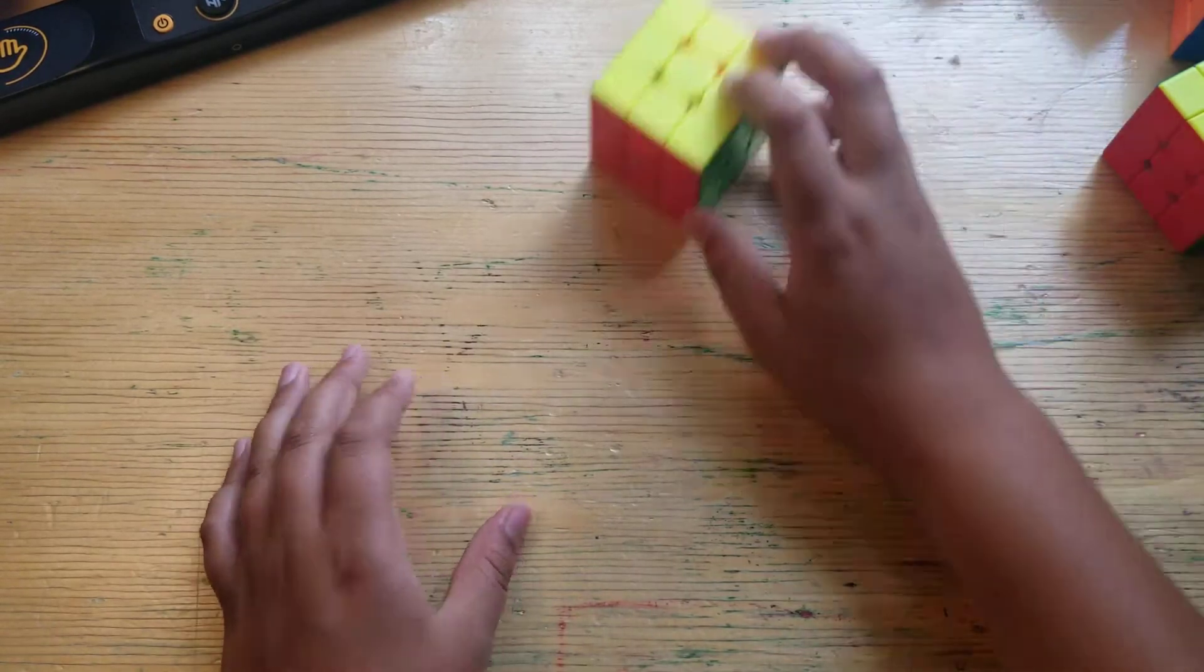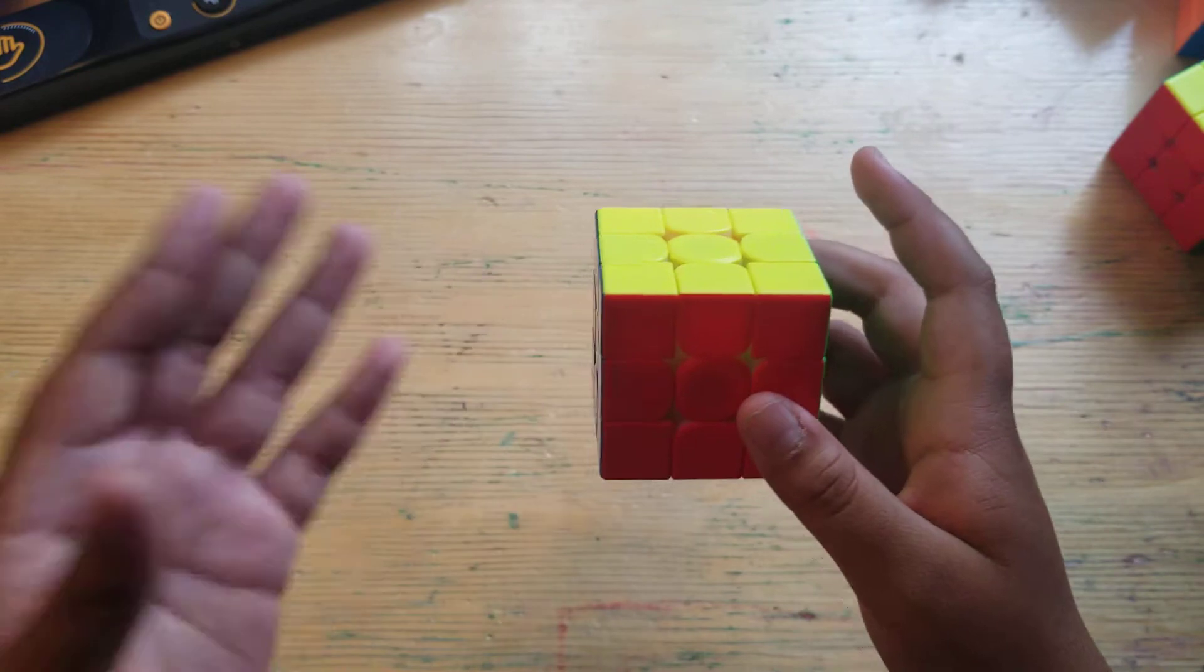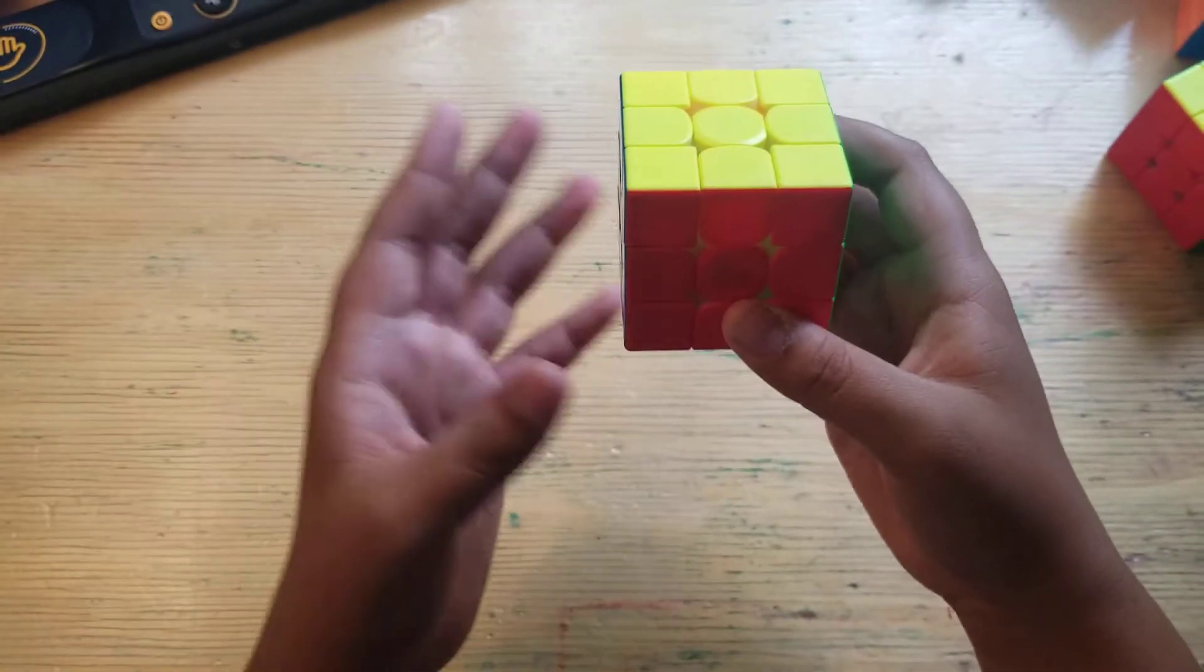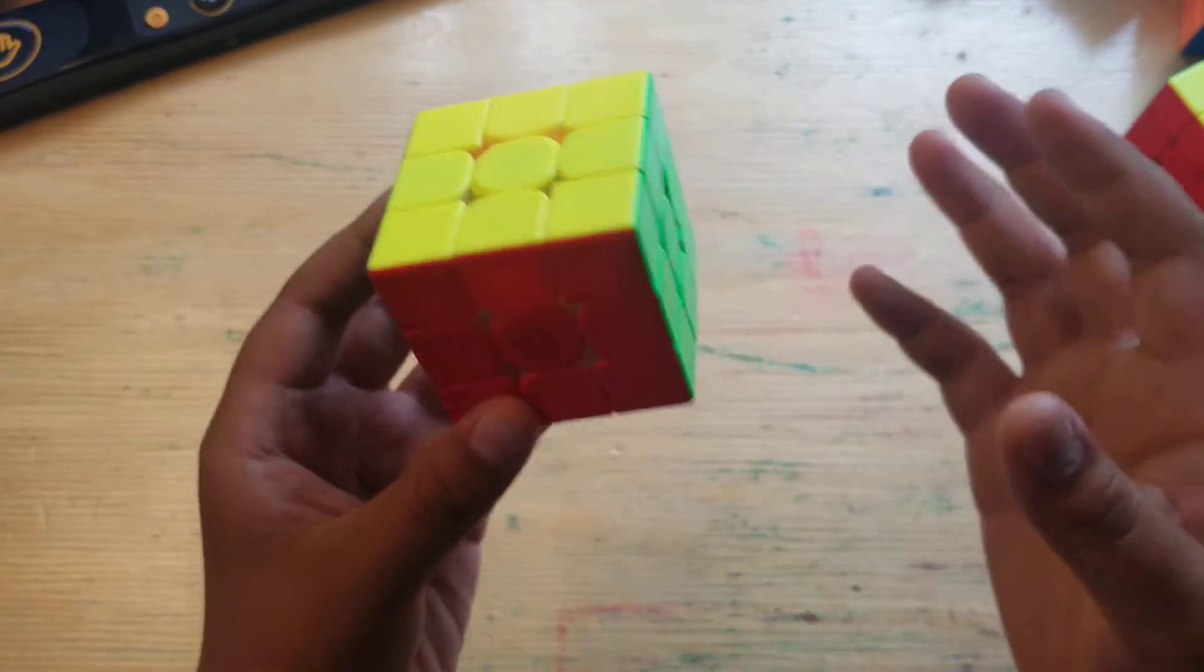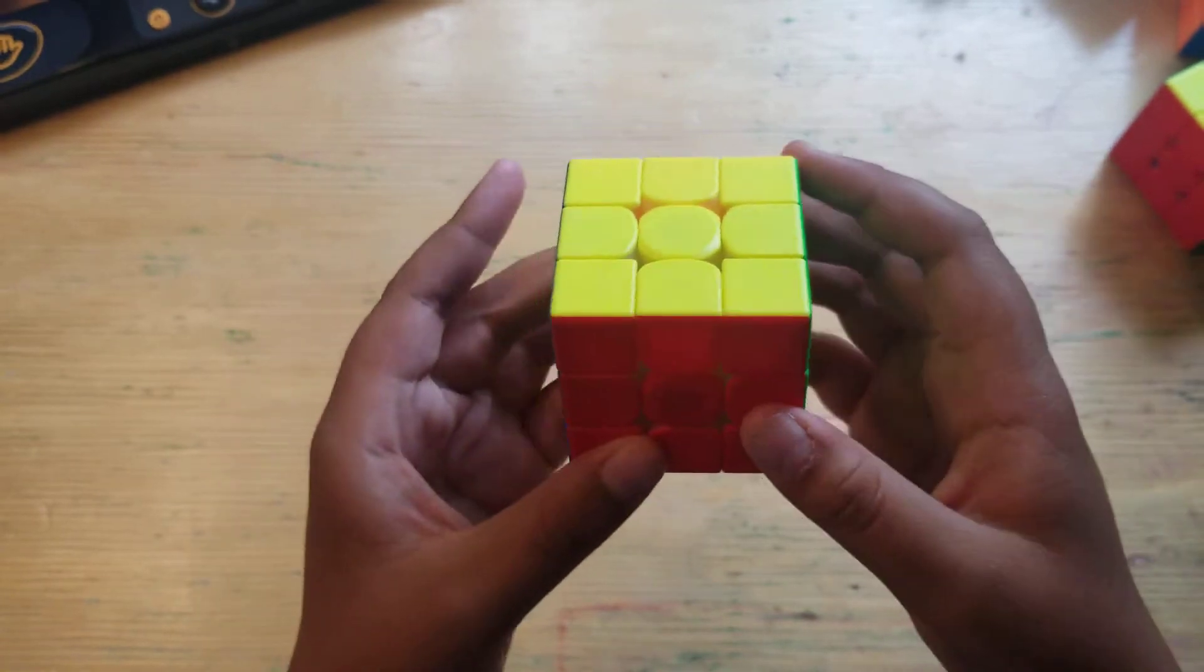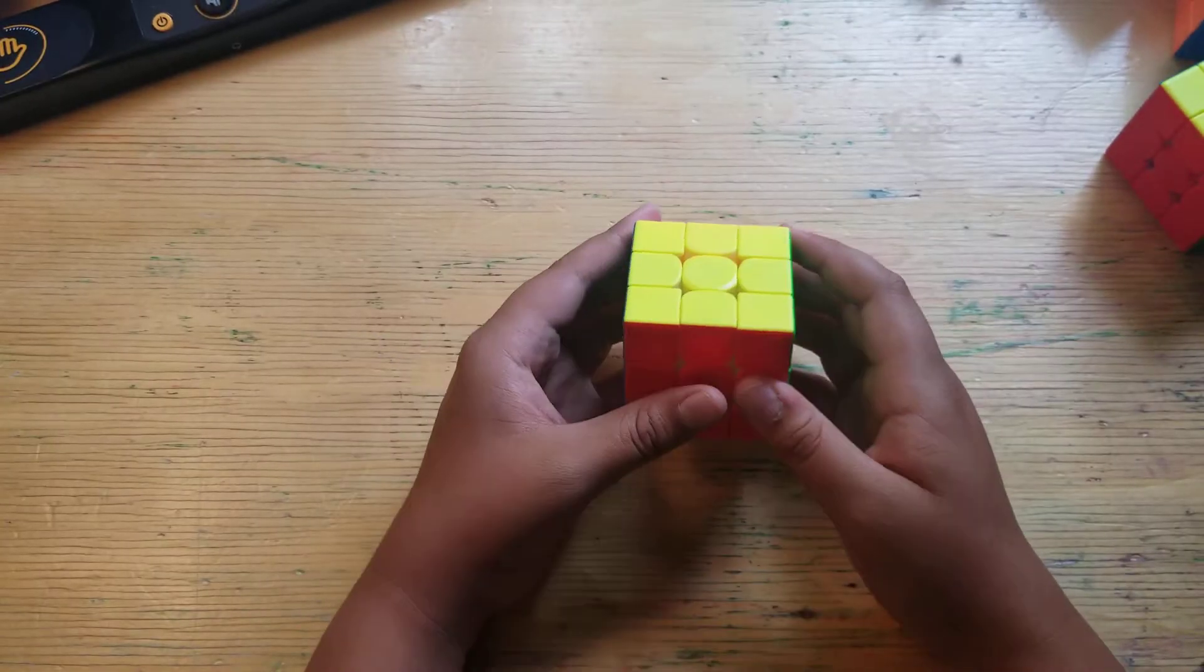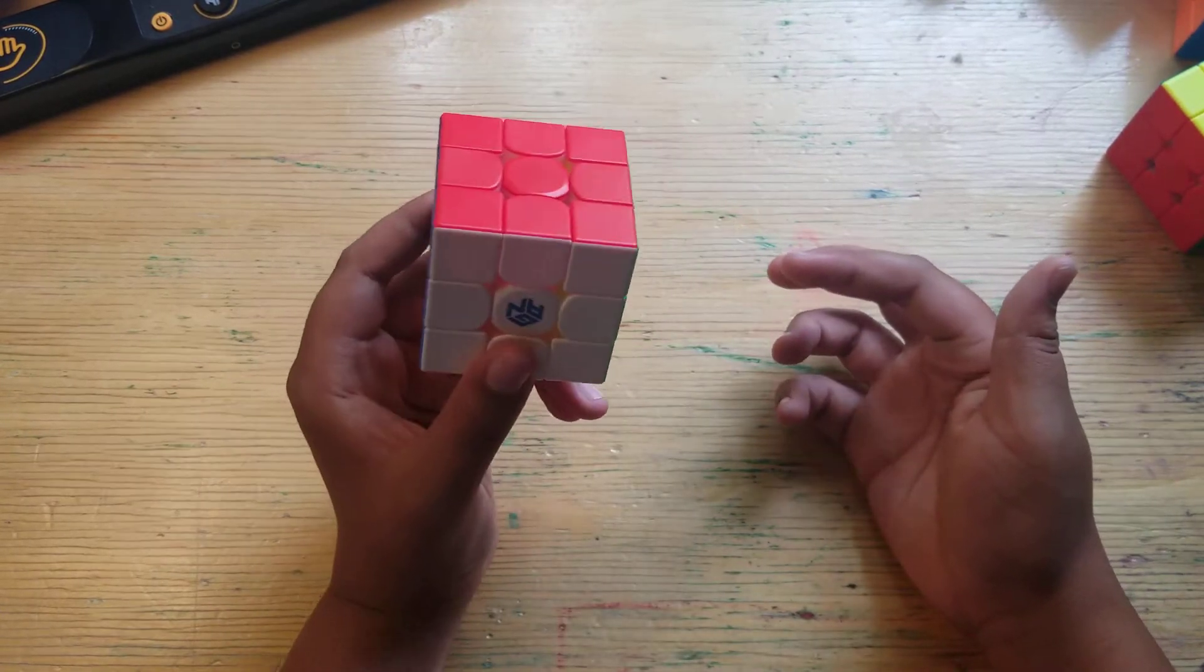The next puzzle we're going to look at is the Gan 11 M Pro. This cube is $47 and it weighs 60 grams. It is actually less than the 11 M Pro, which is its brother. It's also 60 grams but it costs $65 because there are no adjustable magnets and no adjustable core magnets. This is just an updated version of the 11 M Pro.